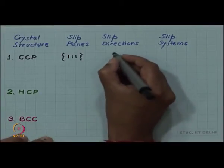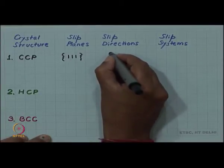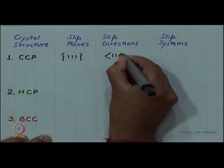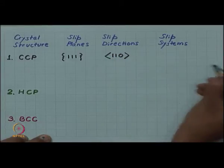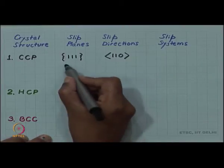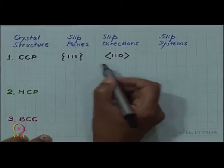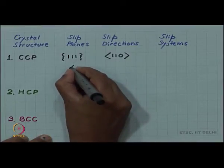And the slip direction, if it is a close-packed direction, so that is of <110> type. Notice the use of brackets, I am using curly bracket because it is not 111 one plane, there are 4 such planes in the crystal.